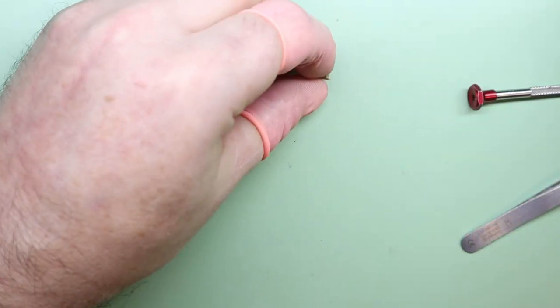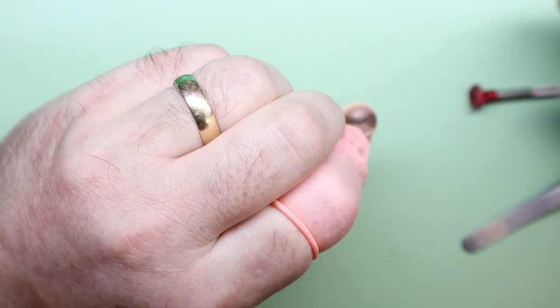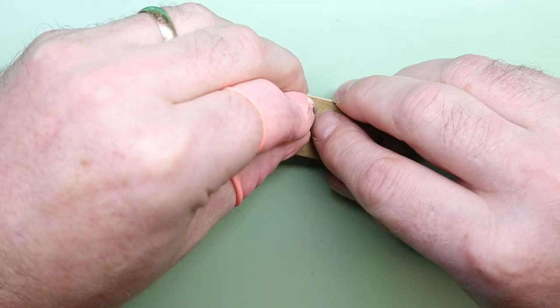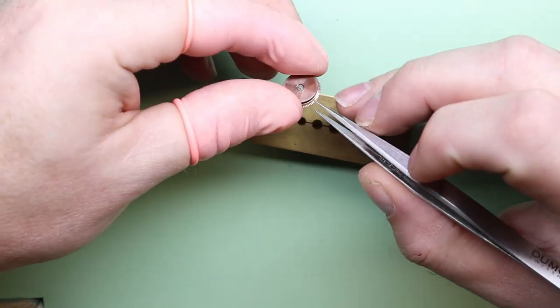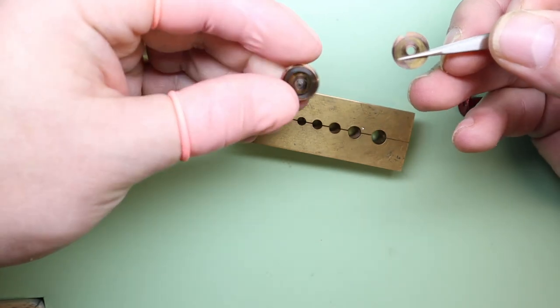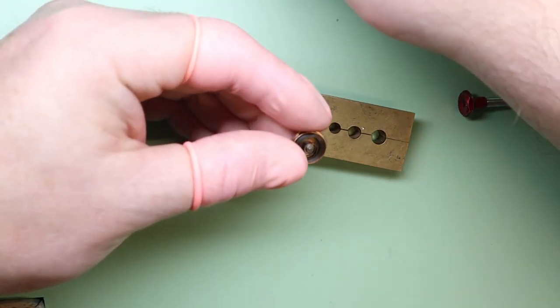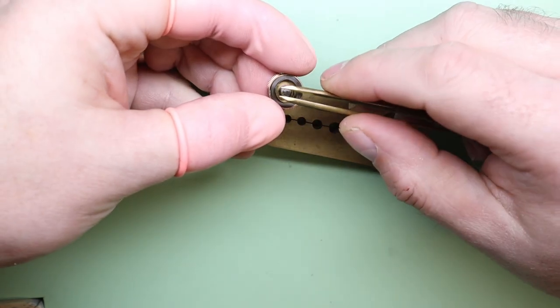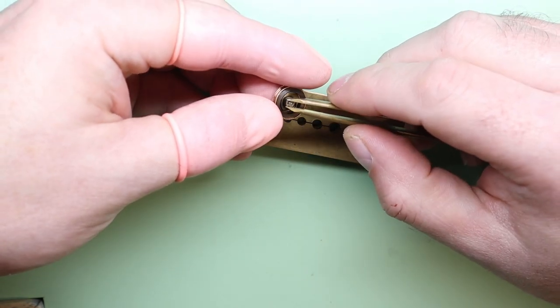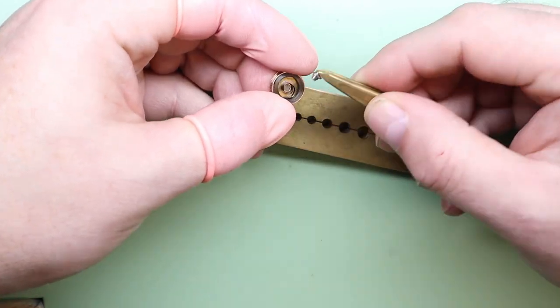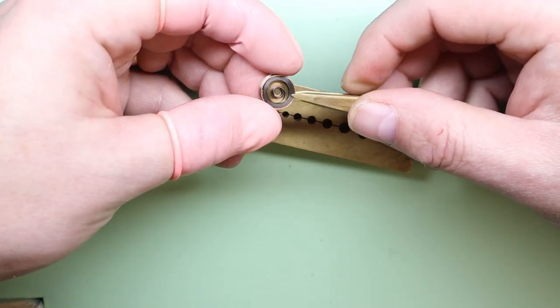Last but not least is the mainspring barrel. The mainspring is going to be replaced on this particular watch. Don't know how old this mainspring is, but I'm pretty sure that it's seen better days. It'll be nice to have a nice fresh new mainspring in there to make sure the watch has got a nice reserve. So we've taken out the barrel mainspring arbor.